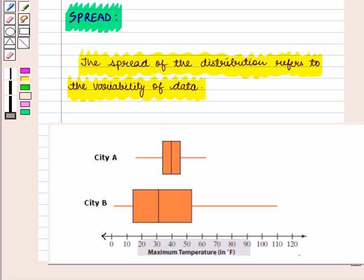And here we can see values for city B are widely spread than the data set for city A.